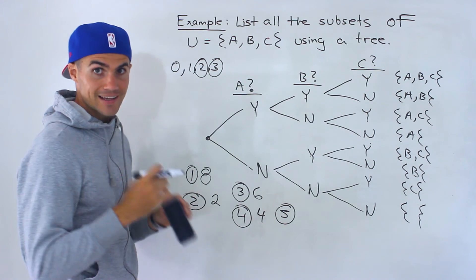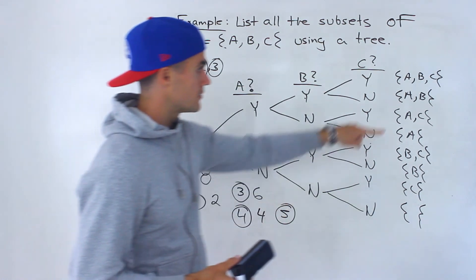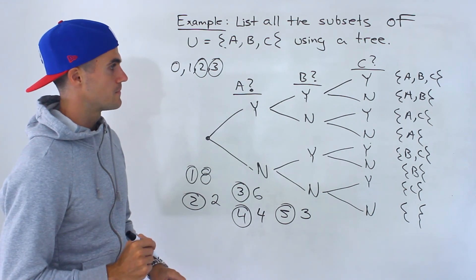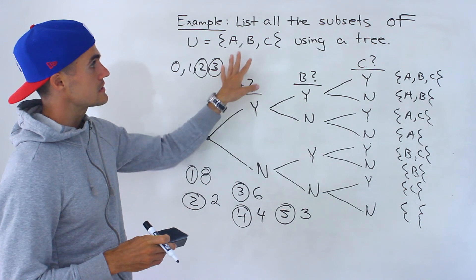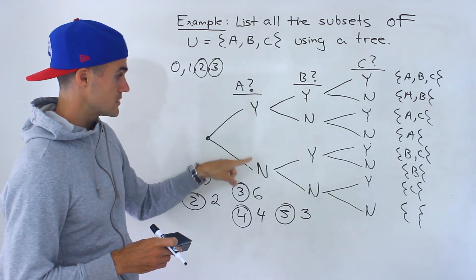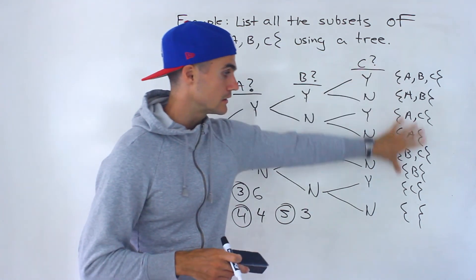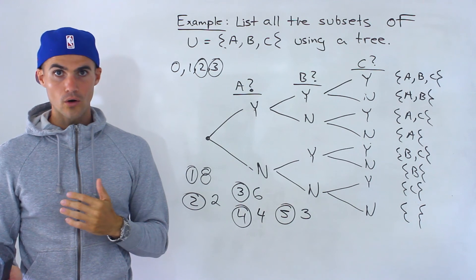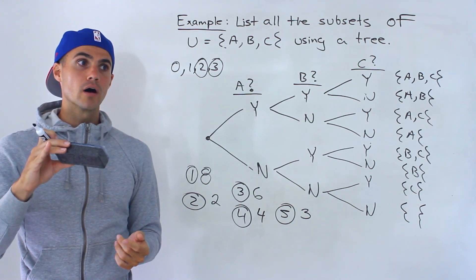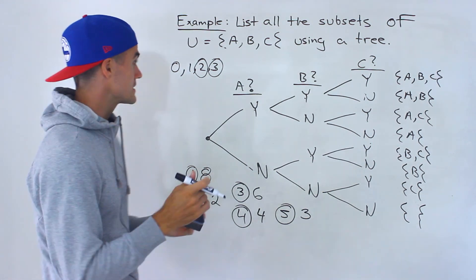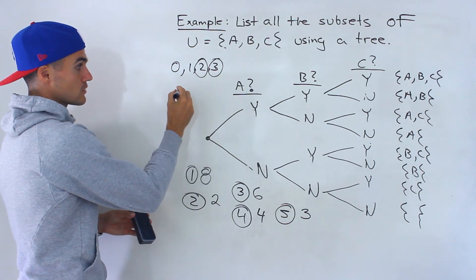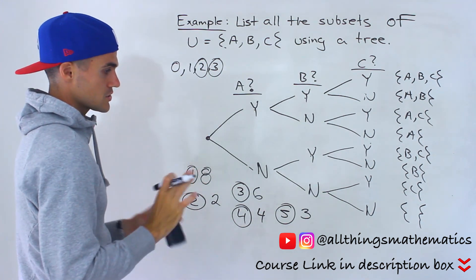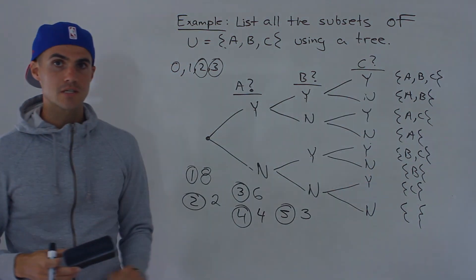Number five asks how many subsets contain exactly two elements. Counting them: one, two, three — so three subsets contain exactly two elements. If you get a question like this where you list subsets using a tree diagram, it's yes or no for each element. Make sure you read the question carefully — pay attention to the wording: and versus or, more than, less than, or greater than or equal to. For example, 'more than one element' is the same as 'greater than or equal to two elements.' Once you have the wording down, just look at the subsets you listed.